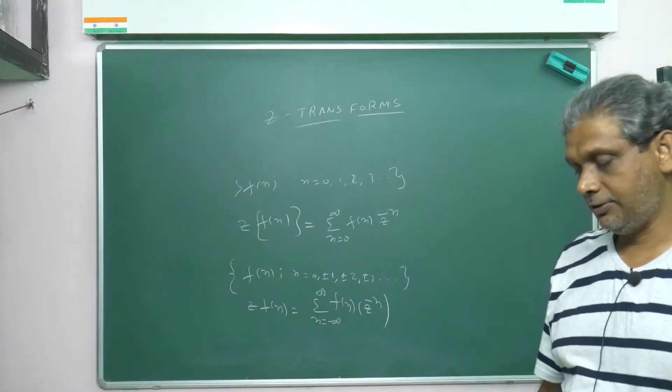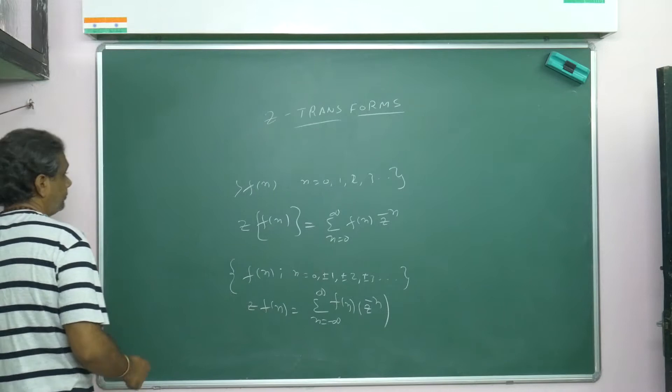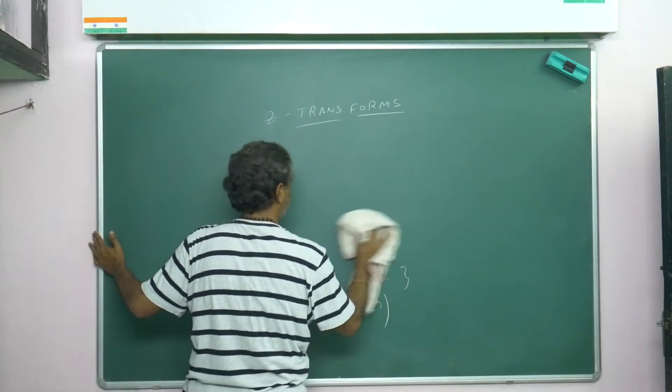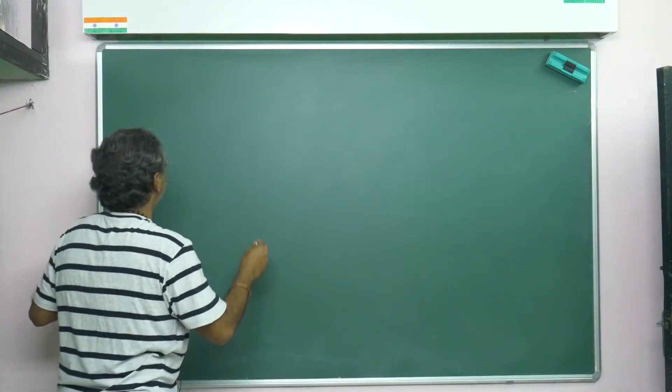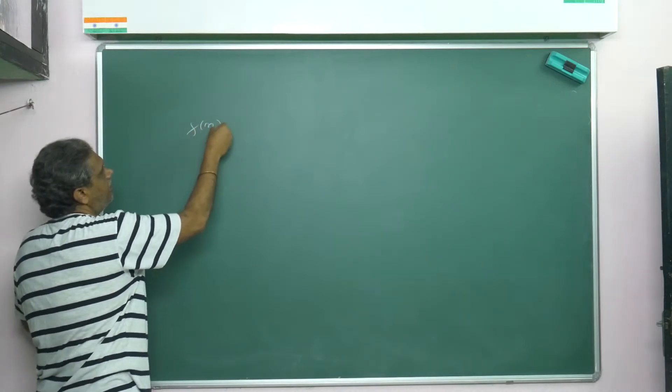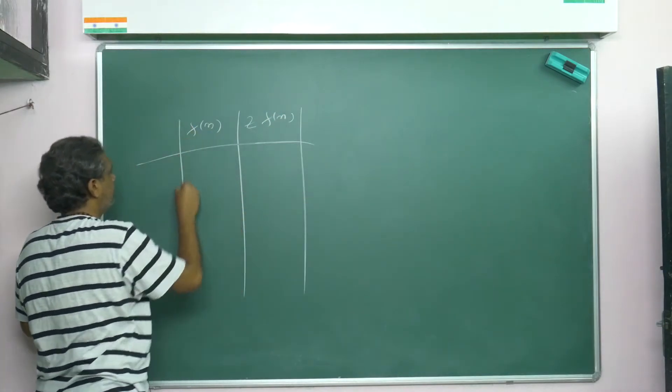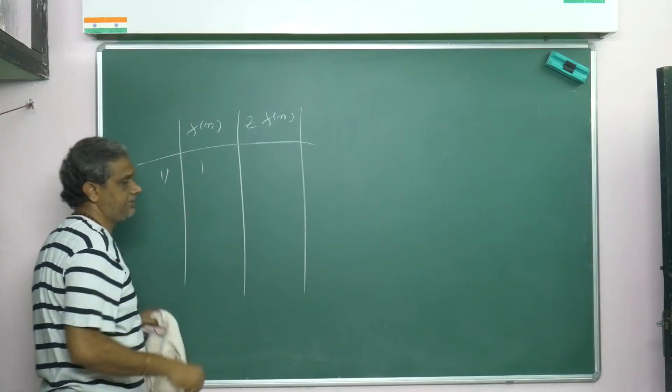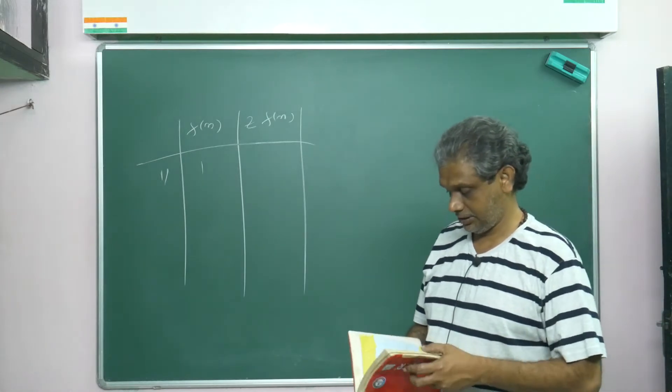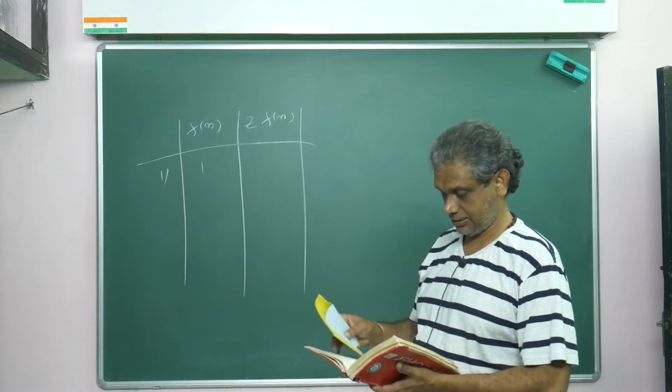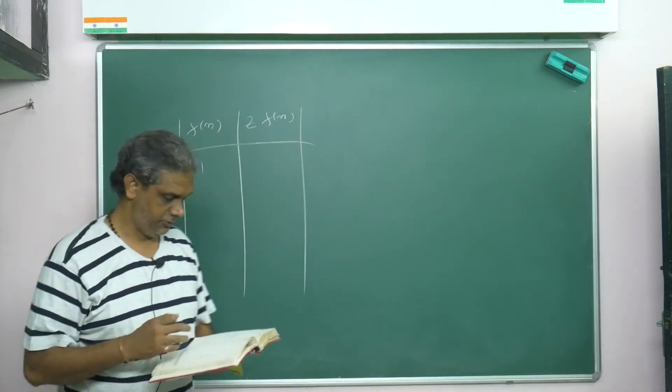In this video we discuss some few important formulas, then we go one by one and prove them. Just take f(n) or f(k), both are the same. Z{f(n)}, I'll give some formulas here. One, which means Z{1}, is equal to z/(z-1).